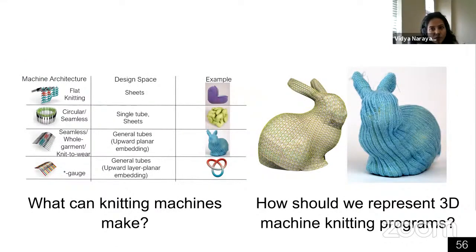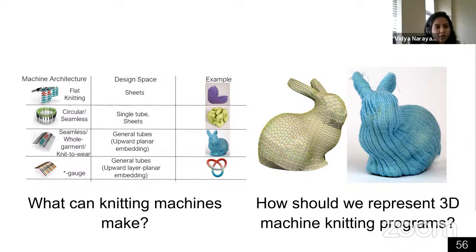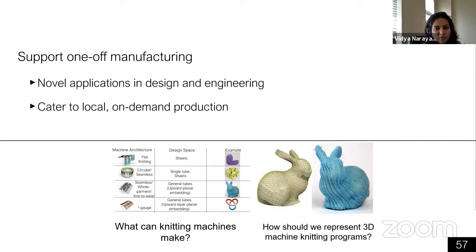To recap: we characterized knitting machines in terms of what 3D outputs they can produce, thinking about what other machine layouts can be constructed. For established standard knitting machines, we talked about a representation for knitting programs that is both in 3D, mesh-based, and has all necessary information for fabrication on the machine. Because it's in 3D, you can look at the shape and compare it with the design space of these machines to determine whether a shape can be constructed on a particular machine. Having such a view of machine knitting as a general fabrication technique with good representations is key to supporting one-off customizable manufacturing that can support novel applications in design and engineering, produced on demand locally.